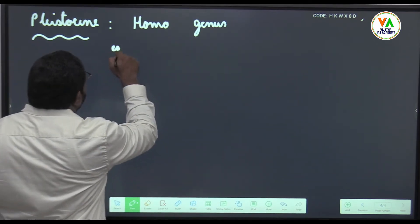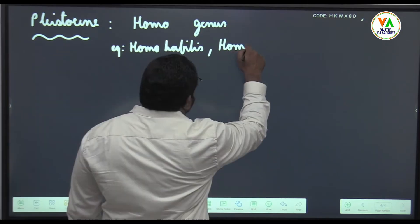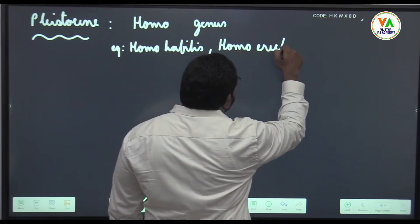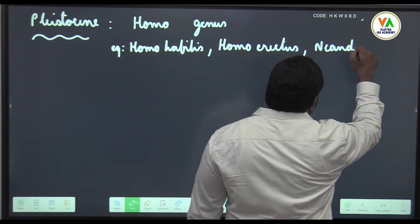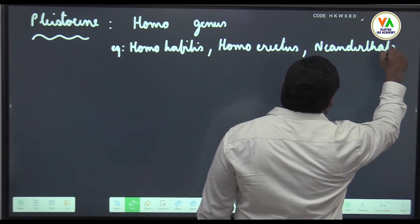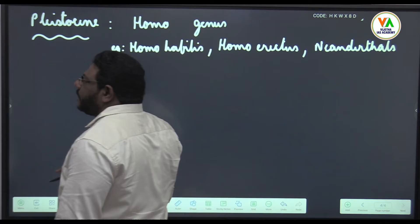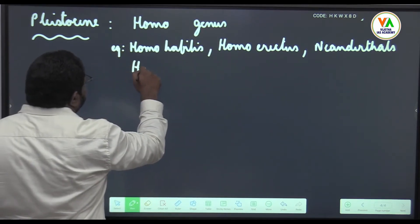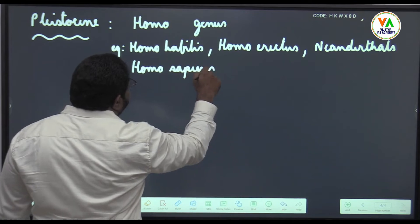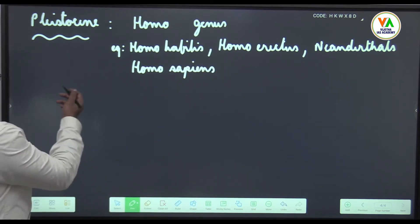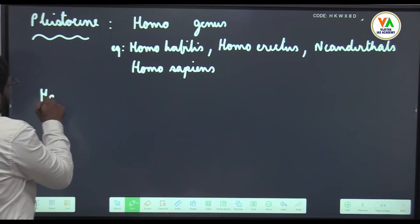Here you can write Homo habilis, Homo erectus, Neanderthals, Cro-Magnon, Grimaldi, Chancelade who are the Homo sapiens, modern Homo sapiens. After this it is Holocene.